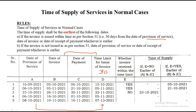Last one: date of invoice is 11th October, the time limit is 10th November, and invoice date is 7th November — the invoice is after the time limit, so no, it hasn't been put within the limit. So the rule is date of provision and date of payment, whichever is earlier. We have 8th October and 16th November — so 8th October is the final answer. This is very important from the exam point of view — time of supply of service in normal cases.